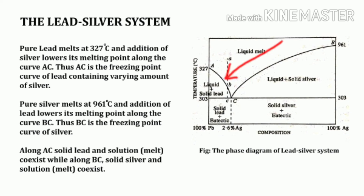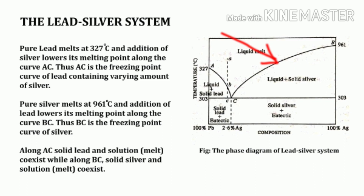As shown in the figure, pure lead melts at 327°C, and the addition of silver lowers its melting point along curve AC. Thus AC is the freezing point curve of lead containing varying amounts of silver. Silver melts at 961°C and the addition of lead lowers its melting point along curve BC, which is the freezing point curve of silver. Along AC, solid lead and the melt coexist; along BC, solid silver and the melt coexist. The system at constant pressure is monovariant along both curves.